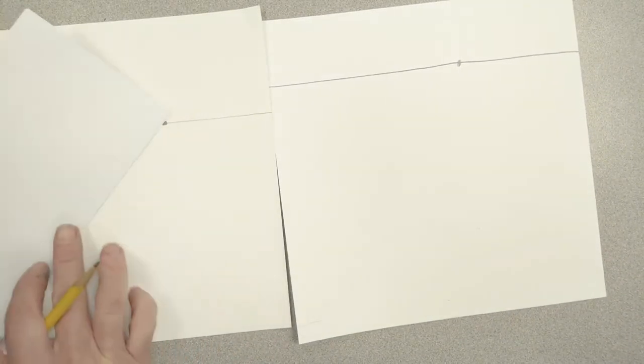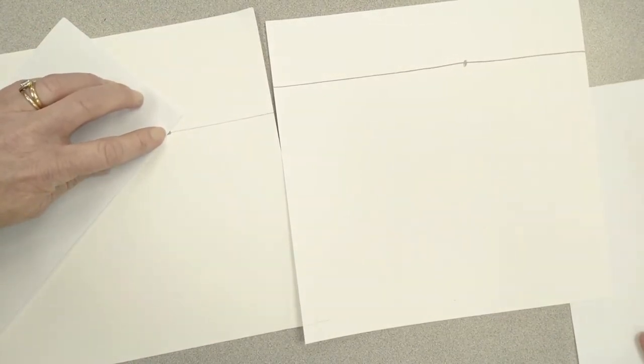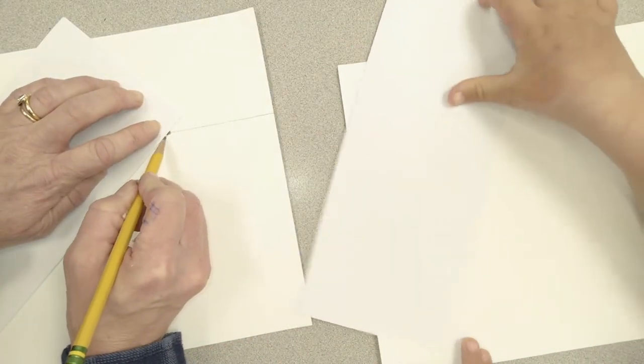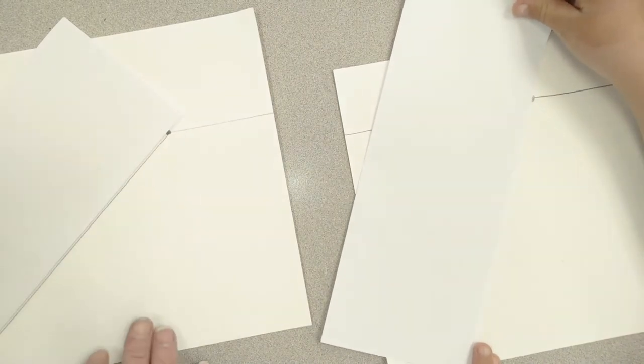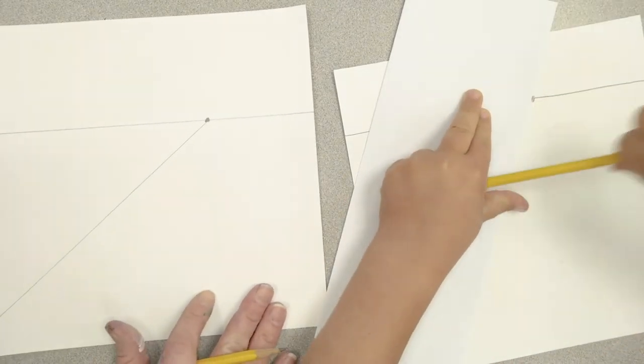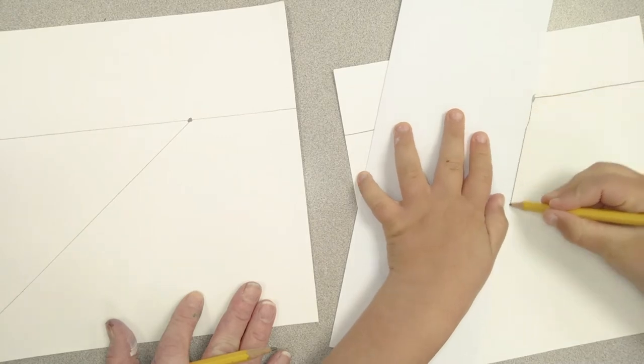Now, all of the lines for the tulip fields are going to connect to that vanishing point. So all we have to do to draw the lines for our tulip fields is hold the edge of that folded paper at the vanishing point, and then wherever we want a line to be, we can draw it. So we're going to start at the vanishing point and run along that paper and draw a line. Just like a ruler. Now it just looks like an angle line.